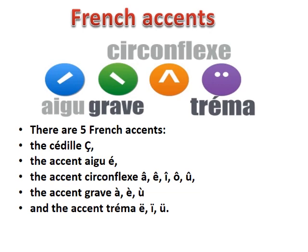The Cedille — you can see the letter C with a small hook underneath it. That hook is called Cedille. The Accent Cedille comes under C and changes the sound from K to S.